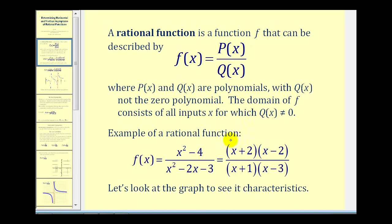Here's an example of a rational function where the numerator is the polynomial x squared minus four, and the denominator is the polynomial x squared minus two x minus three. It's often helpful to express a rational function in factored form as we see here. Let's take a look at the graph of this function.